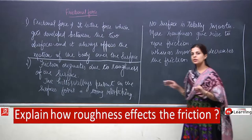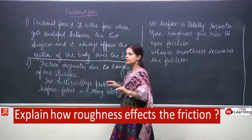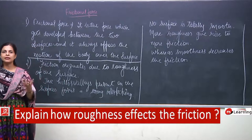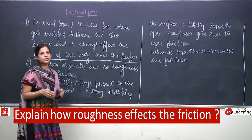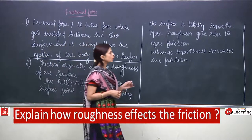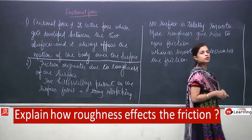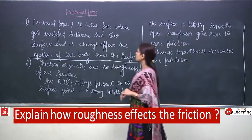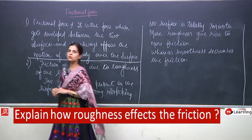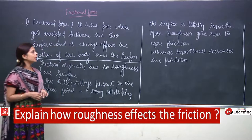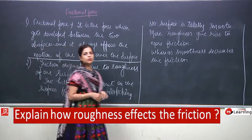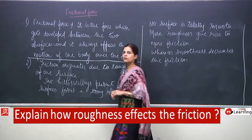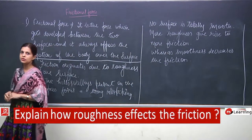Friction always originates due to the roughness of the substance. If the substance is rough, more friction will be created; if the surface is smooth, less friction will be created. But there is no substance which is totally smooth — every substance will exert some frictional force. Now we will move on to question number 3.